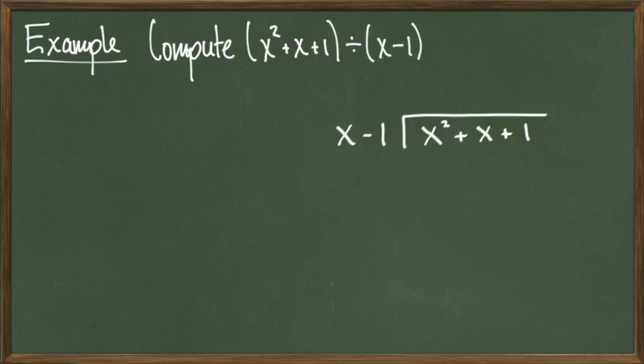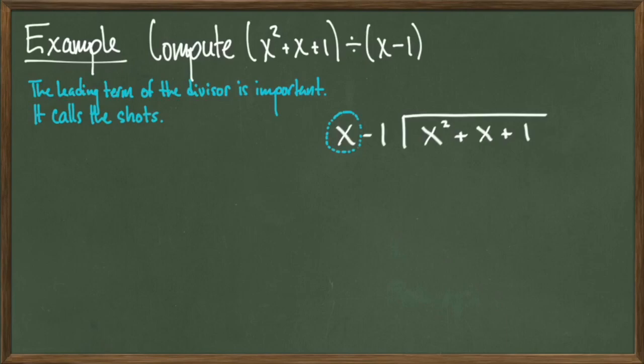The main idea here is we are going to multiply the polynomial x minus 1 by terms that we have to come up with so that certain terms appear. In our case, the first term that should appear is x squared because it is first in the list. We choose x squared because that is the leading term of the polynomial that we are dividing into, so that x squared shows up in the product. Now when we look at the polynomial x minus 1 on the outside, the leading term is x, so it's essentially going to call the shots here.